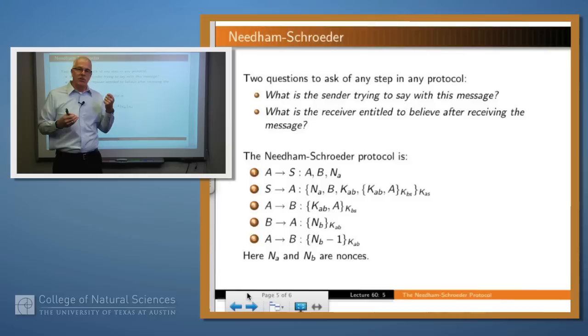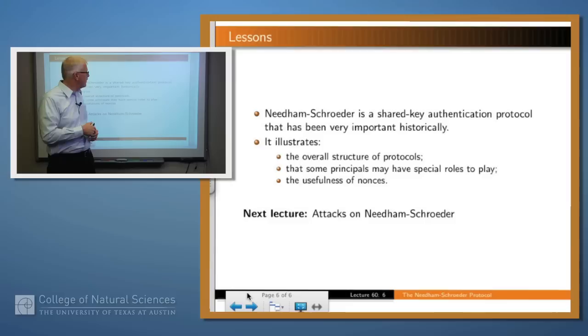Notice the minus one there is not really important. It could have been minus 17, or the square root, or any function, just enough to show that A can actually decrypt the previous message, apply some function to it, and re-encrypt it. That's the important thing.